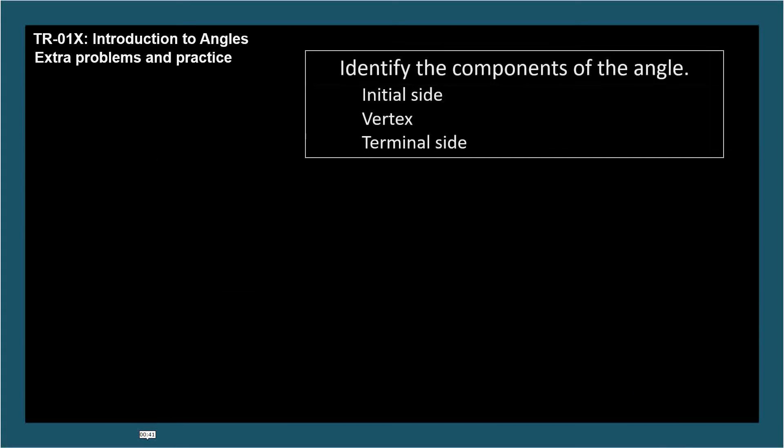Identify the components of the angle. Pause, and I'll reveal the answers. The initial side is the side with the angle arrow's tail, so ray OR. The vertex is pretty obviously the corner, so point O. And the terminal side has the arrow's point, so ray OS.